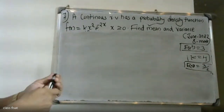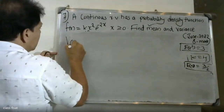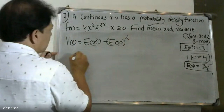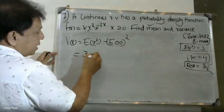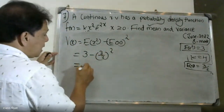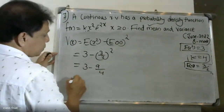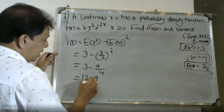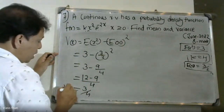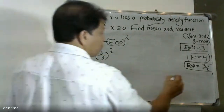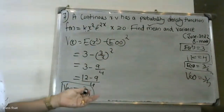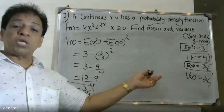Therefore, the variance is equal to expectation of x squared minus expectation of x, all squared. Expectation of x squared is 3, and expectation of x is 3 by 2 so expectation of x squared is 9 by 4. Variance of x equals 3 minus 9 by 4, which is 12 minus 9 divided by 4, equal to 3 by 4. The standard deviation is the square root of 3 by 4.